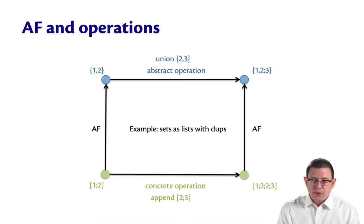Well, what about the concrete operation? That's going to be appending [2,3]. And if I append the list [2,3] to the list [1,2], I get [1,2,2,3].